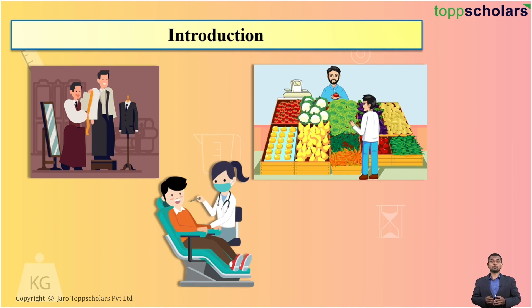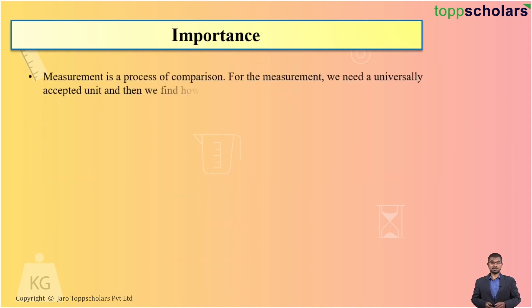And students, this was the need for measurement because it should be accepted universally. And thus, measurement is a process of comparison. For the measurement, we need a universally accepted unit and then we find how many times the unit is contained in the given quantity.